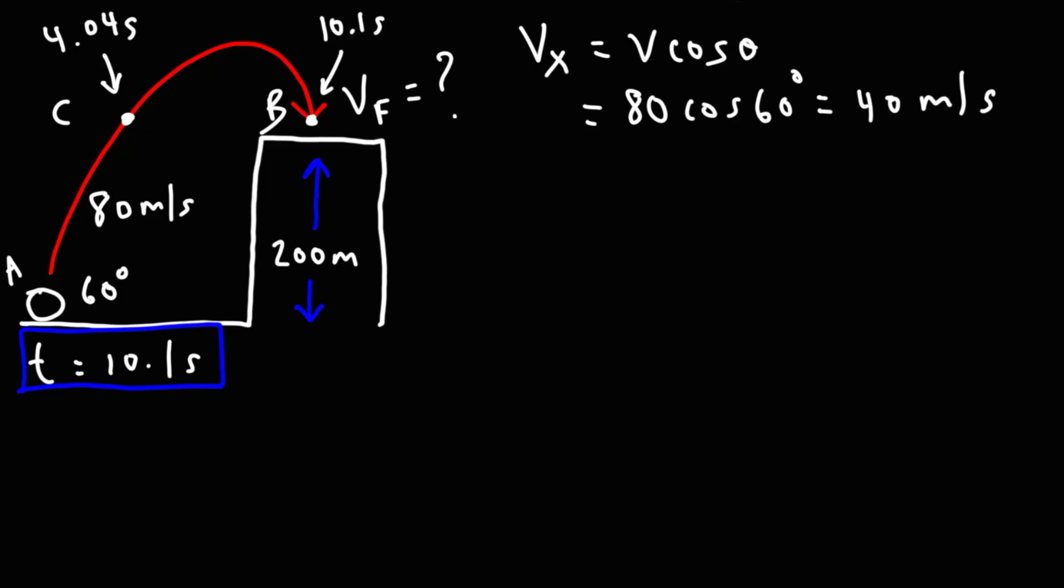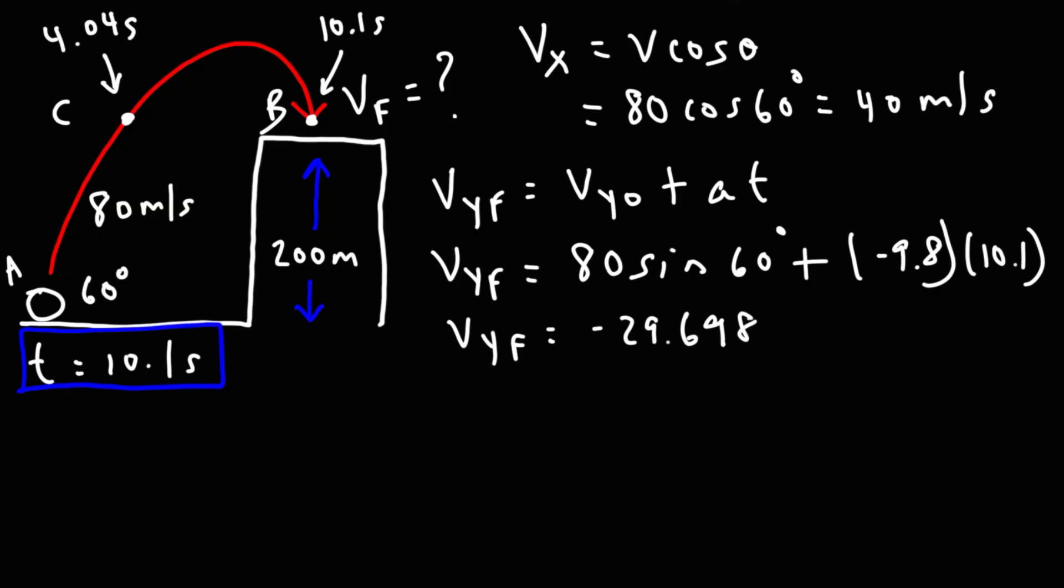Now, Vy changes due to the acceleration of gravity. So to find Vy, we need to use this equation: Vy final is equal to Vy initial plus At. Vy initial, that's V sine theta, so that's 80 sine 60. The acceleration due to gravity is negative 9.8, and the time it takes to go from A to B is 10.1 seconds. 80 sine 60, we know that value, it's 69.282 minus 9.8 times 10.1. That will give us negative 29.698 meters per second.